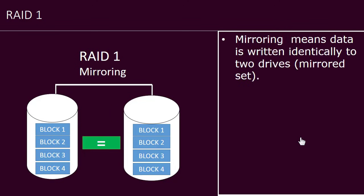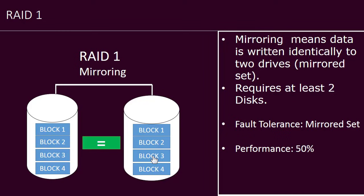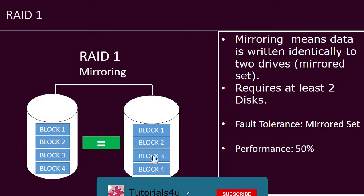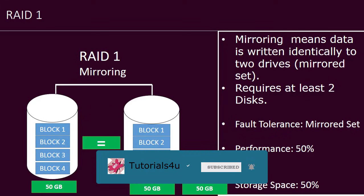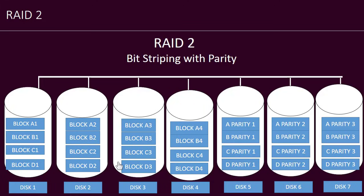RAID Level 1 uses a concept called mirroring. Mirroring means copying the same data to another hard drive. The advantage is that if one hard disk fails, we have another hard disk with our data stored, so we can replace the failed disk and use the data from the second drive. However, performance is 50 percent as we are duplicating the work, and only 50 GB out of 100 GB can be properly utilized — the other 50 GB is kept for mirroring.